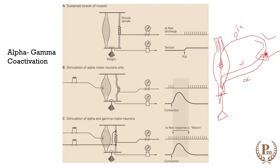These 1a fibers are going to give a monosynaptic connection to the alpha motor neuron. The alpha motor neuron, in response to the afferent impulses coming via 1a fibers, is going to cause the contraction of the extrafusal fibers. Now, in a situation where we are not considering the gamma motor neuron, what would have happened?